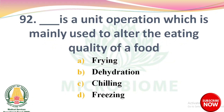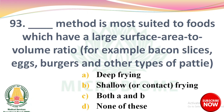Next question: dash is the unit operation which is mainly used to alter the eating quality of a food. Options: frying, dehydration, chilling, freezing. The right answer is Option A: frying. Next question: dash method is most suited to foods which have a large surface area to volume ratio, for example bacon slices, eggs, burgers and other patties. Options: deep frying, shallow or contact frying, both A and B, none of these. The right answer is Option B: shallow or contact frying.